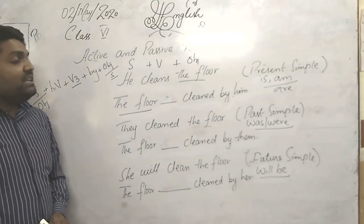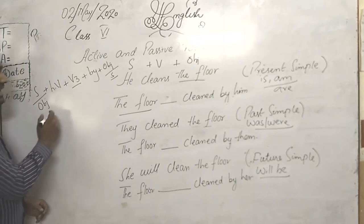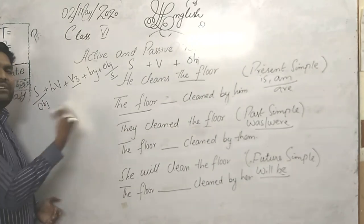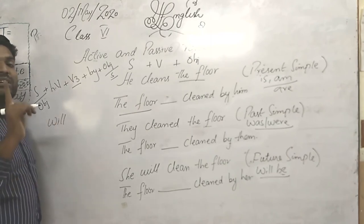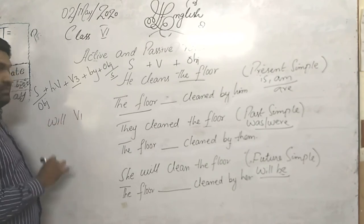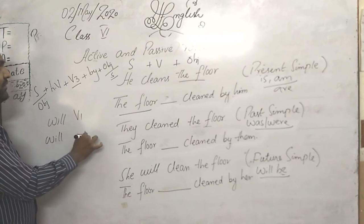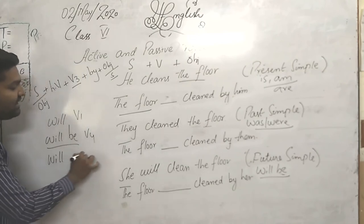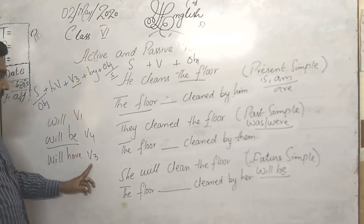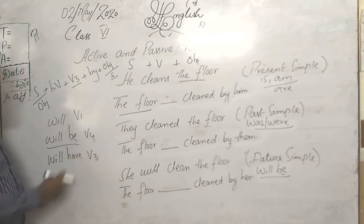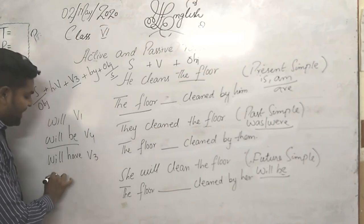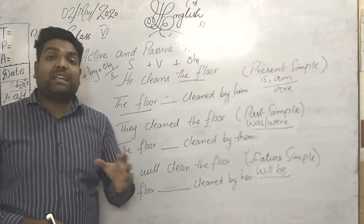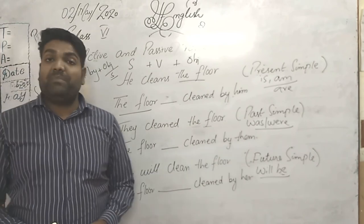The answer is 'will be.' With will, we always use the base form of the verb — not the second, third, or fourth form. In future simple, we use will with the first form. In future continuous, will with the fourth form, but we use 'be' before it. In future perfect, will with the third form and 'have' in between. In future perfect continuous, 'will have been.' So with will, we always use the base form, and 'be' is used here as the base form.